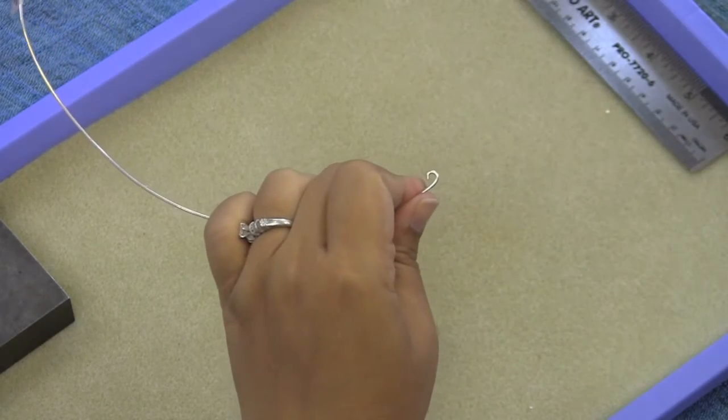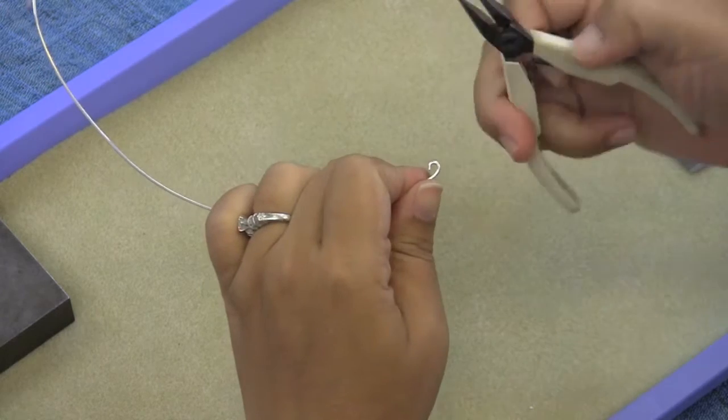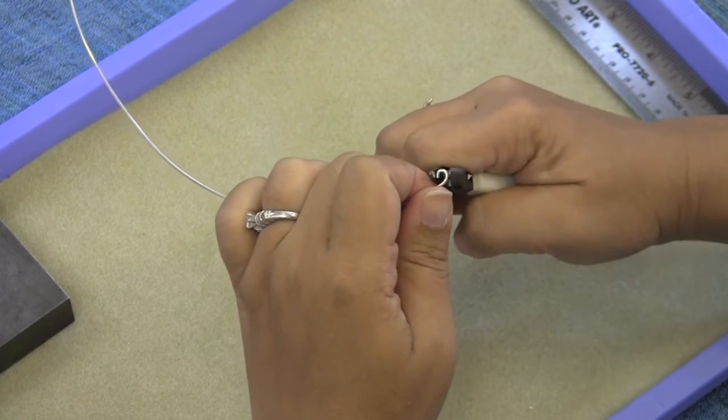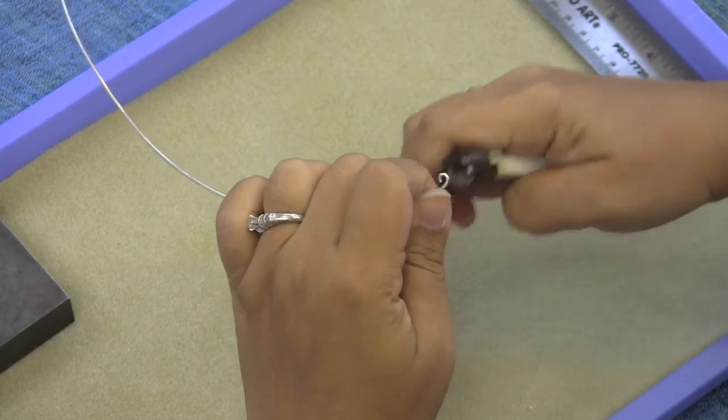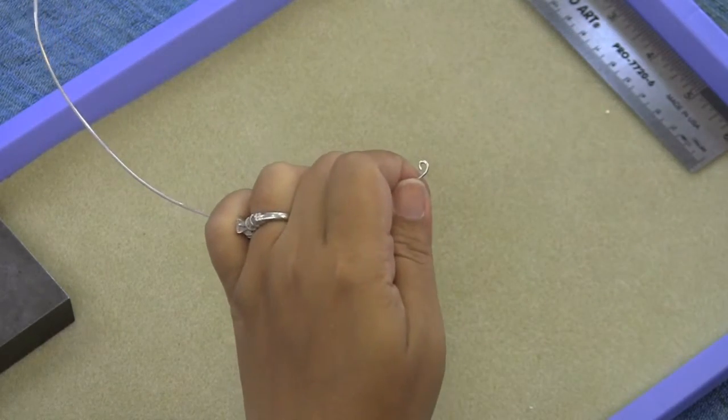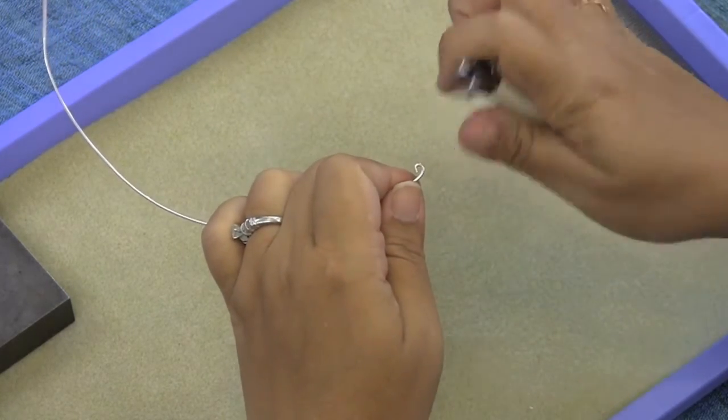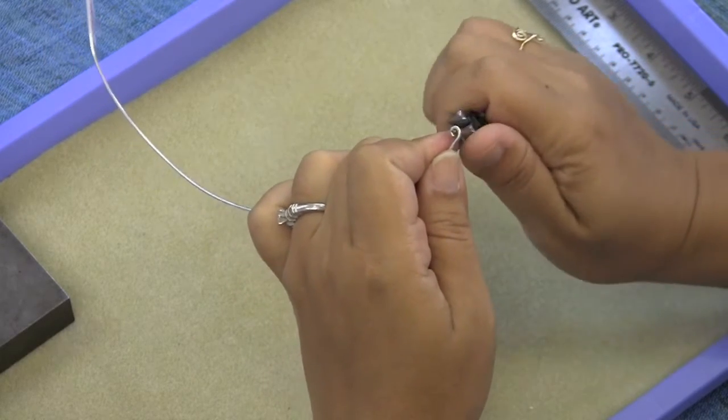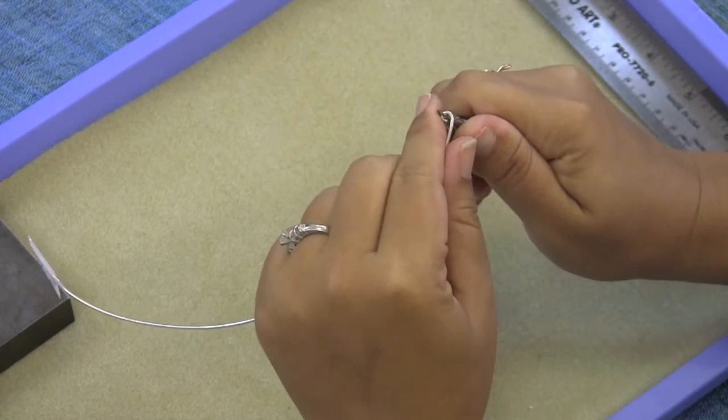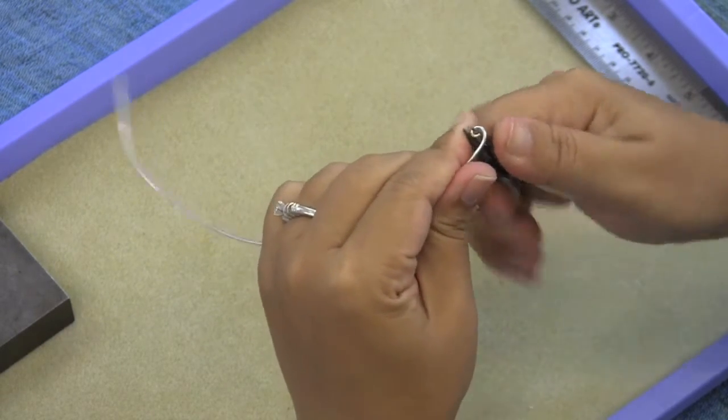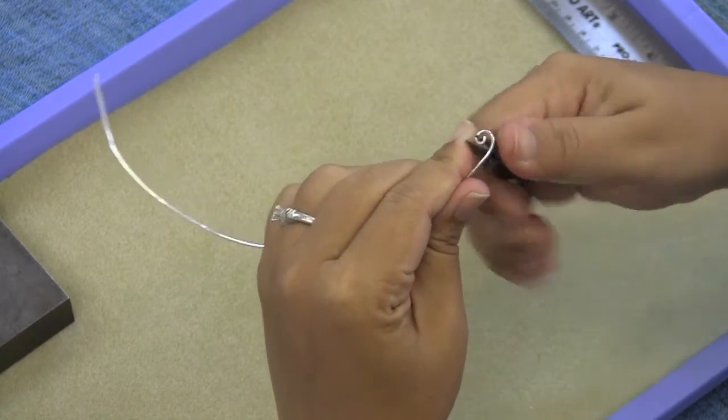I want to tighten the curl by squeezing it with my chain nose plier just to make it a little bit smaller in case it was a little bit too big when you turned it on your round nose plier. And I'm going to put my round nose plier back into that loop and use it as an anchor to form my spiral.